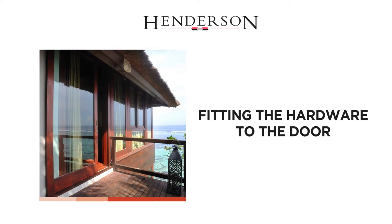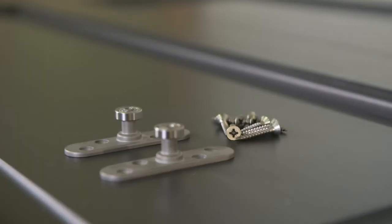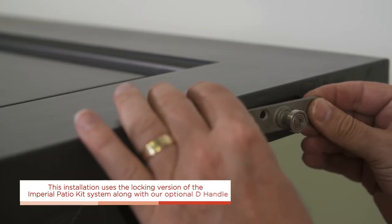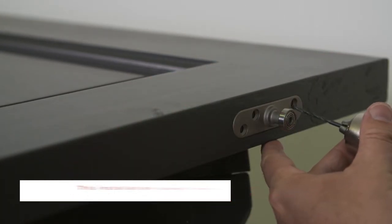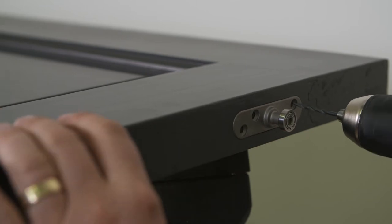Fitting the hardware to the door. Place the top guides into the pre-routed detail at the top of the door and screw into place, drilling pilot holes first if necessary.